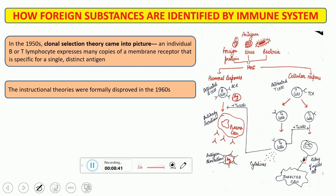In the 1950s, another theory — clonal selection theory — came into the picture. The clonal selection theory states that an individual B or T lymphocyte expresses many copies of a membrane receptor specific for a single distinct antigen. Later, the instructional theories were formally disproved. So in the 1960s, we can understand from this diagram how the immune system works once the antigen enters the human body.